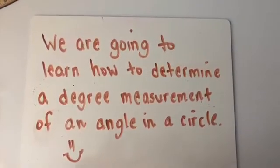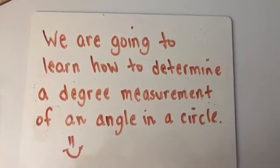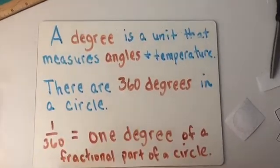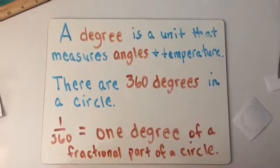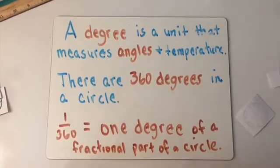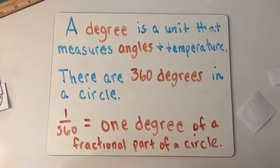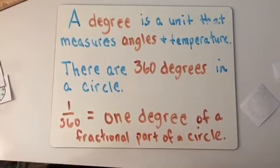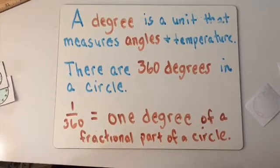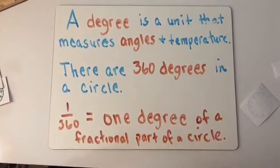So today we're going to learn how to determine a degree measurement of an angle in a circle. A degree is a unit that measures angles and temperature, but for today, we're going to be looking at degrees and angles. There are 360 degrees in a circle, and 1/360th equals 1 degree of a fractional part of a circle.